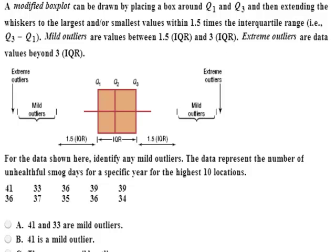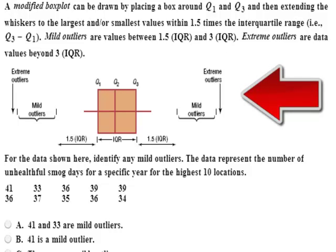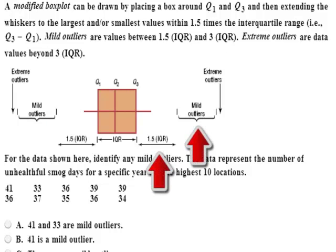In this problem, we're asked to identify any mild outliers. The diagram above defines mild outliers as any data values that are more than 1.5 times the interquartile range either above Q3 or below Q1.